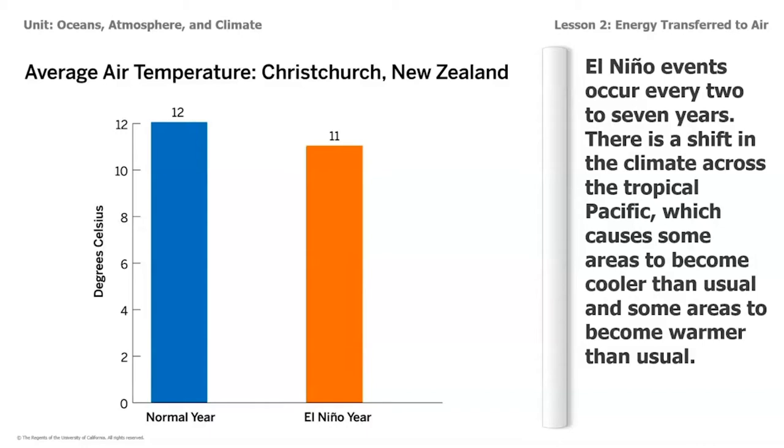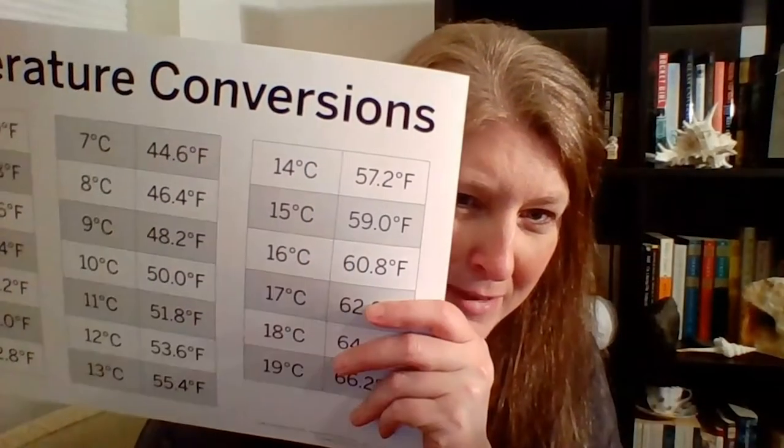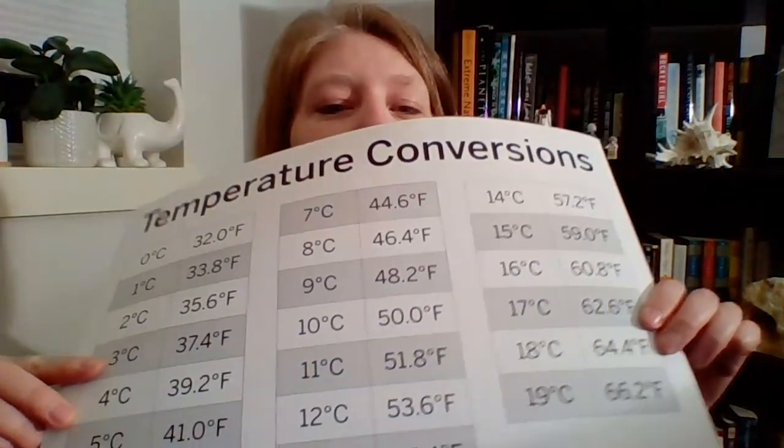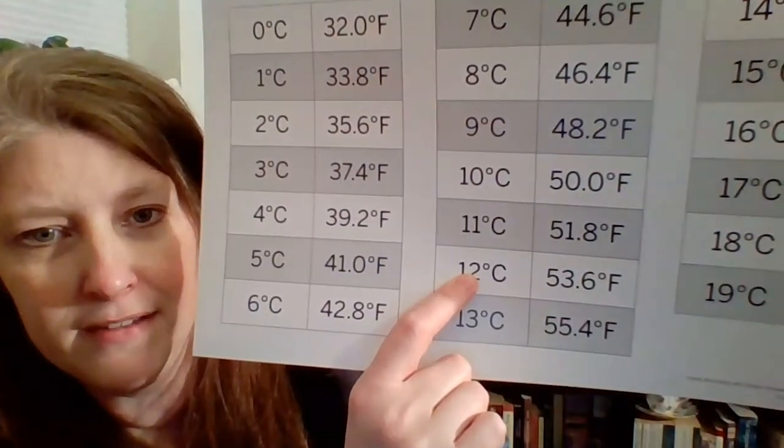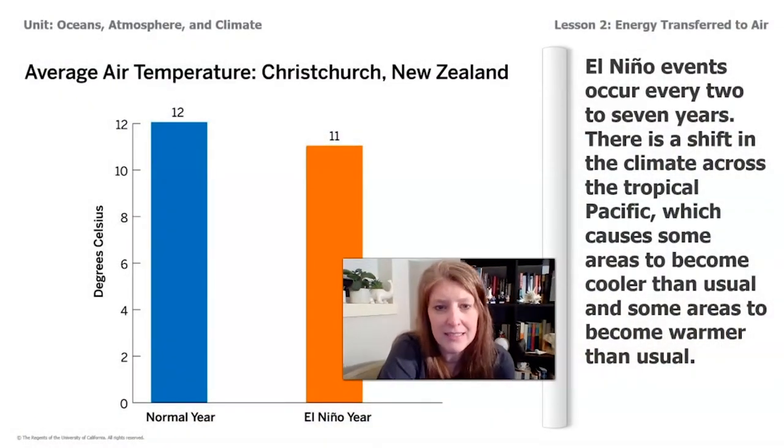Having a better understanding of Celsius and Fahrenheit will help. I have this handy poster with conversions — you can see right here that 12 degrees Celsius is 53.6 degrees Fahrenheit. So 53 degrees doesn't seem like super warm. When I think about a warm day in Seattle I would think 75 or 80 degrees, but in the winter temperatures in Seattle can get down to the 40s on a normal day in January or February. This graph is actually telling us the average.